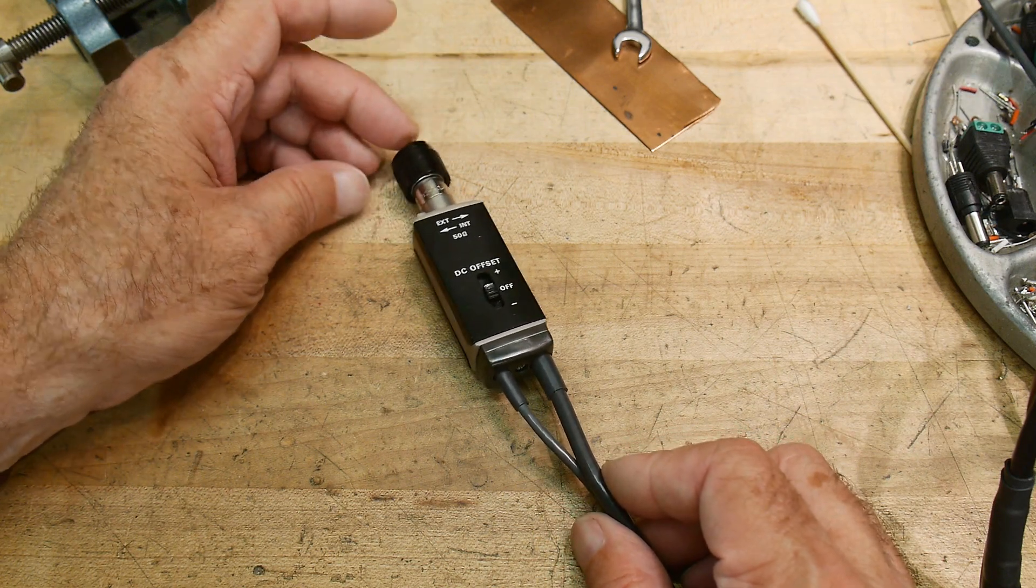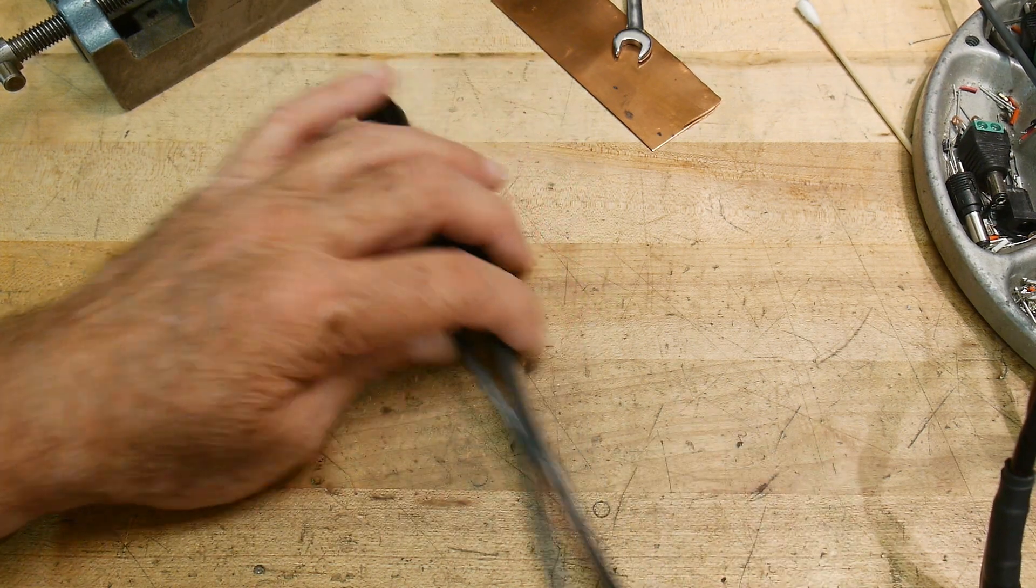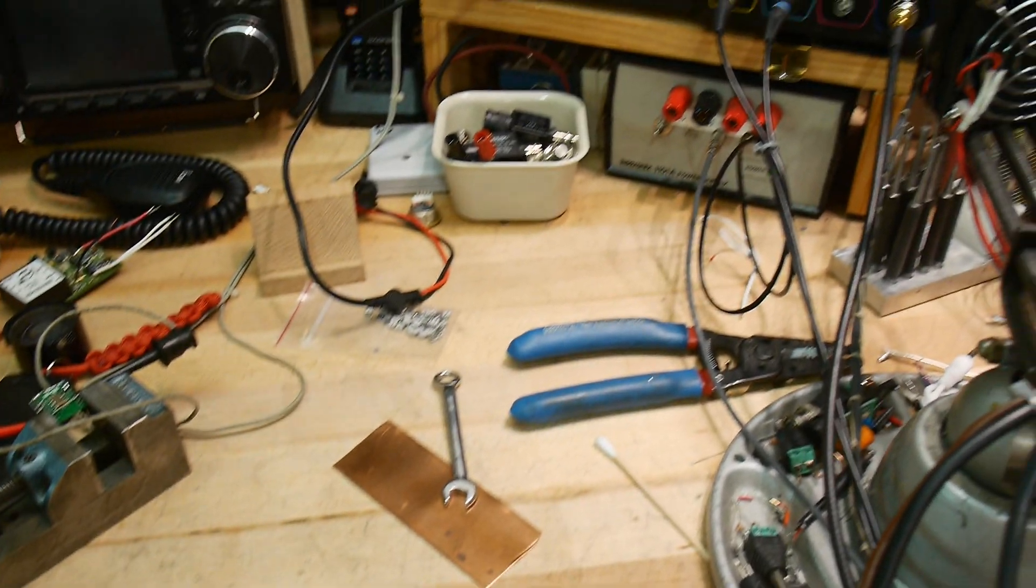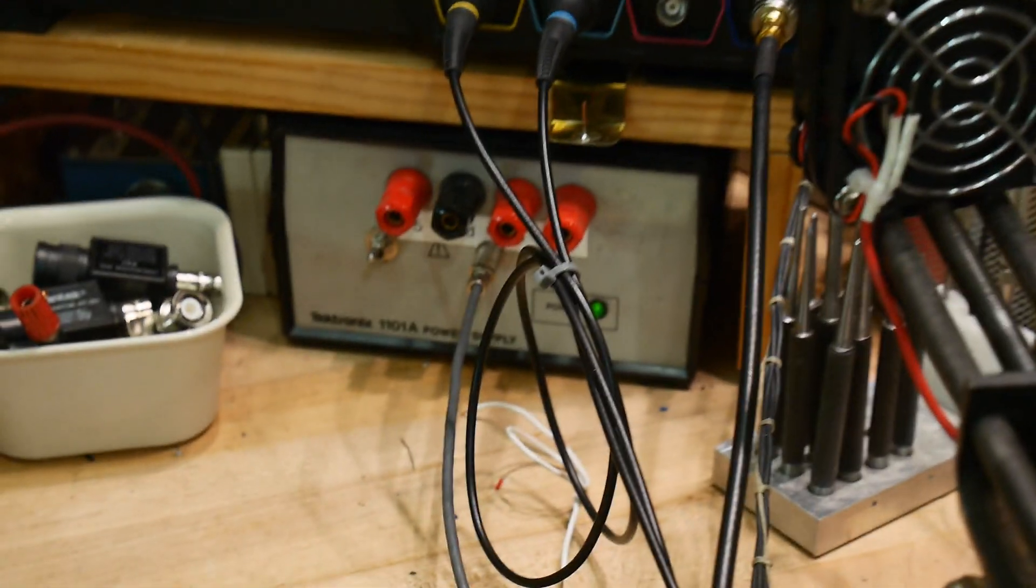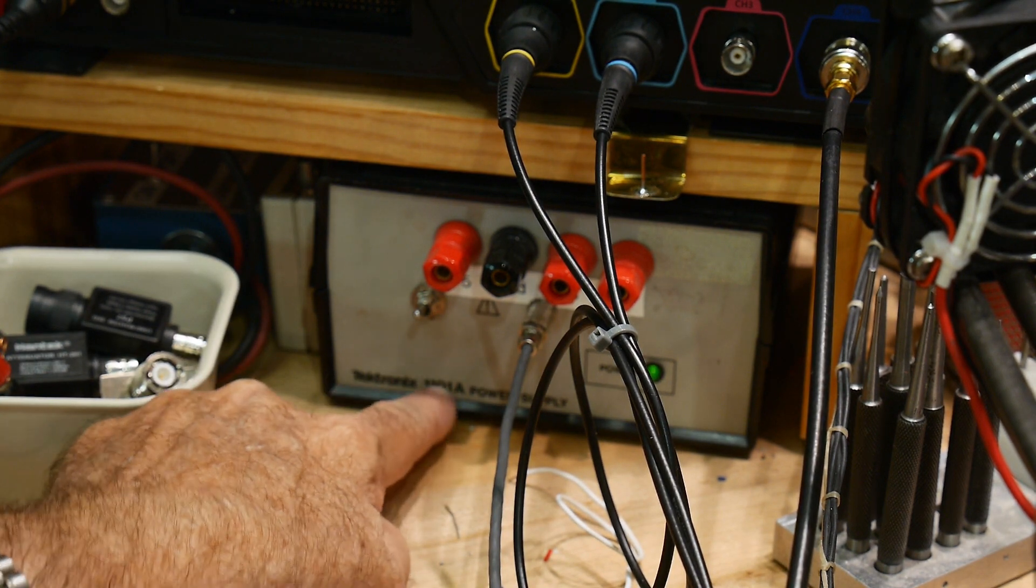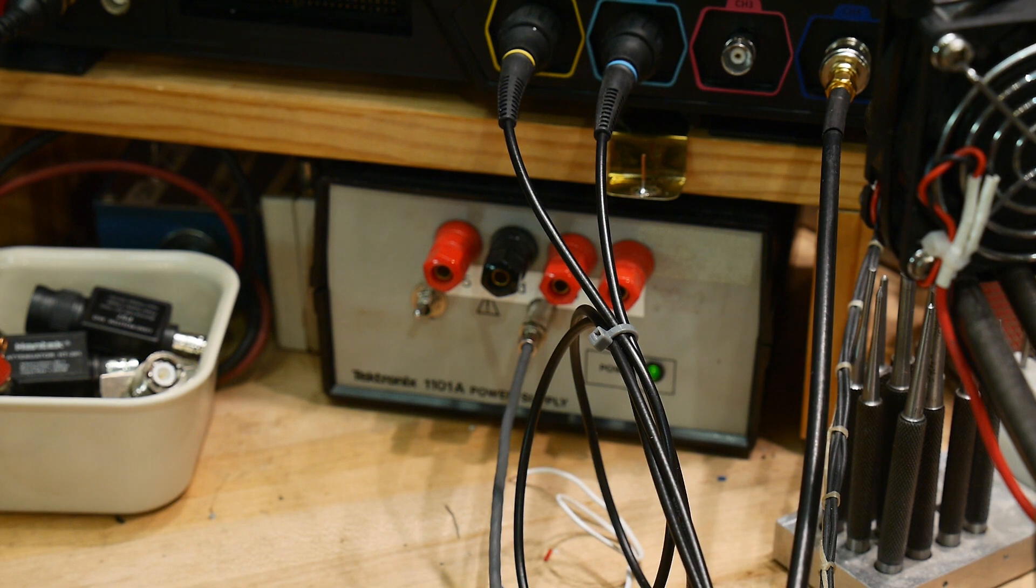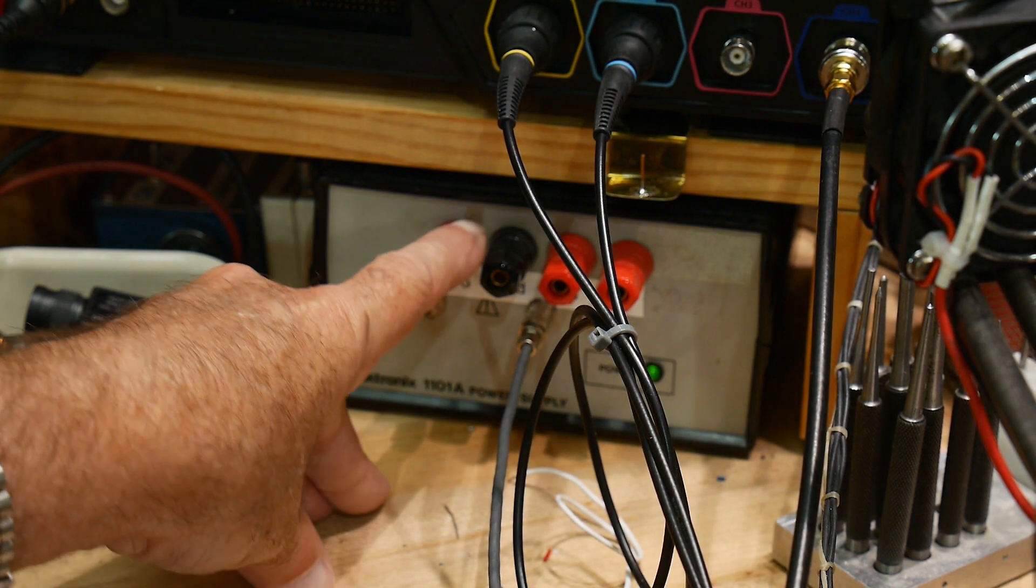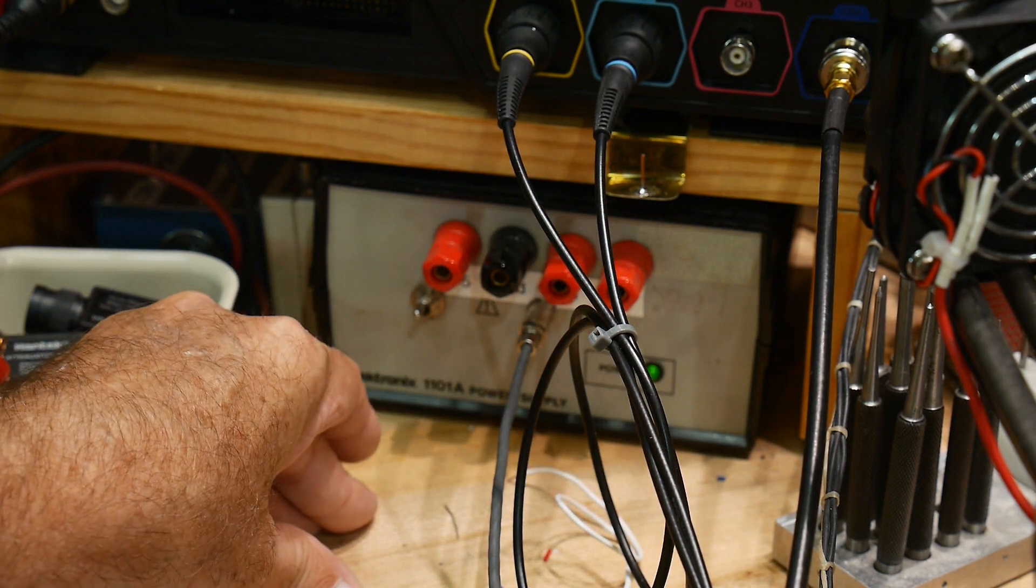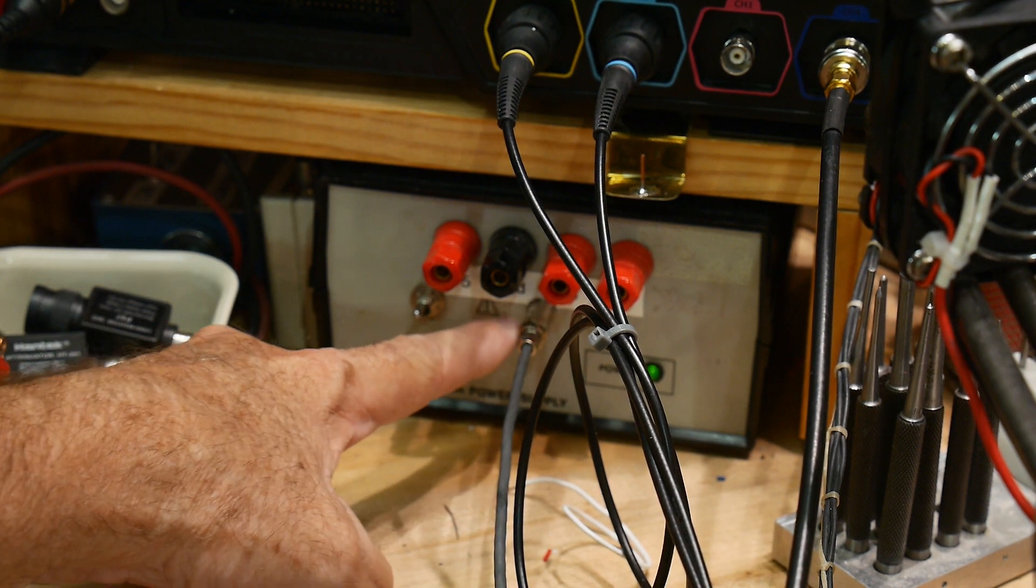As I mentioned in the last video, a lot of times the power comes from the scope itself. But back when your scope didn't have the power for this thing, you went ahead and bought an external power supply. Well, I actually happened to have one, this Tektronix 1101A. Now I went ahead and hacked it so I can use it on the bench at plus five and plus minus 15, so it's a nice supply.